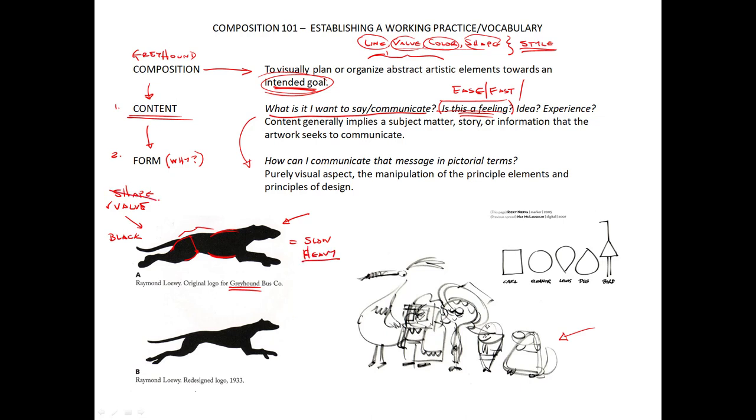So no, that's the wrong form content relationship because I don't get to the feeling I want to communicate. So if I go back to my composition, I have the plan, I have my abstract elements, but the goal wasn't reached.